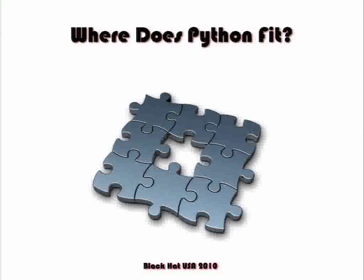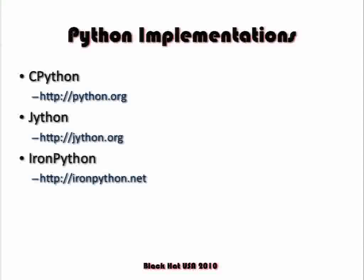There are a couple different Python implementations. CPython is the main version you probably think of — it's written in C and it's fast. Jython has been around a long time — that's Python inside of Java. And on the flip side, IronPython is Python inside of .NET.